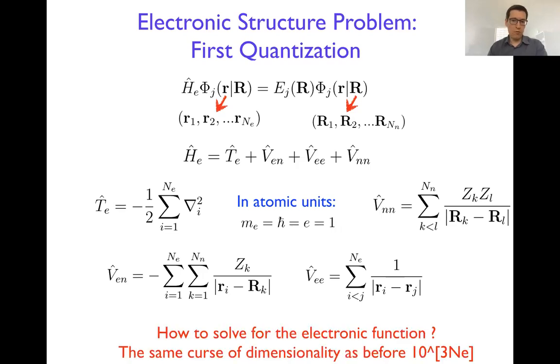In order to solve for the electronic function, it's still a hard problem because the number of electrons can be large, and the dimensionality grows with the number of electrons. With dimensionality, the complexity of the problem grows exponentially—essentially like before, we have exponential growth of complexity for the wave function with the number of electrons.